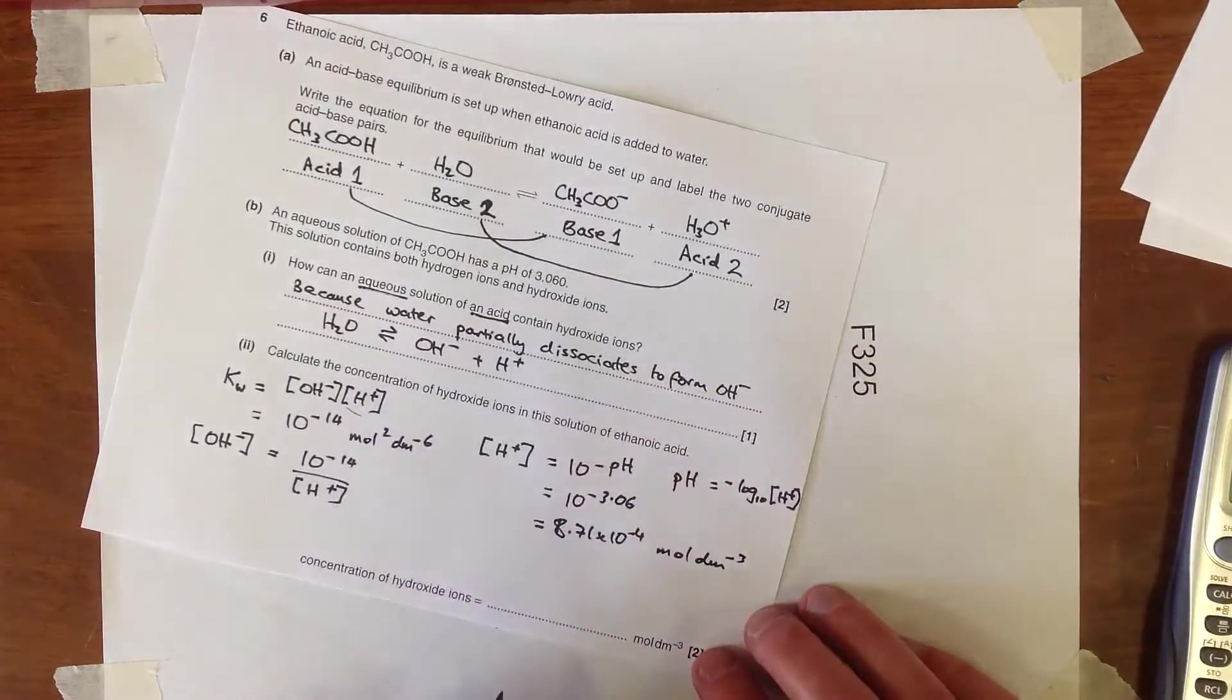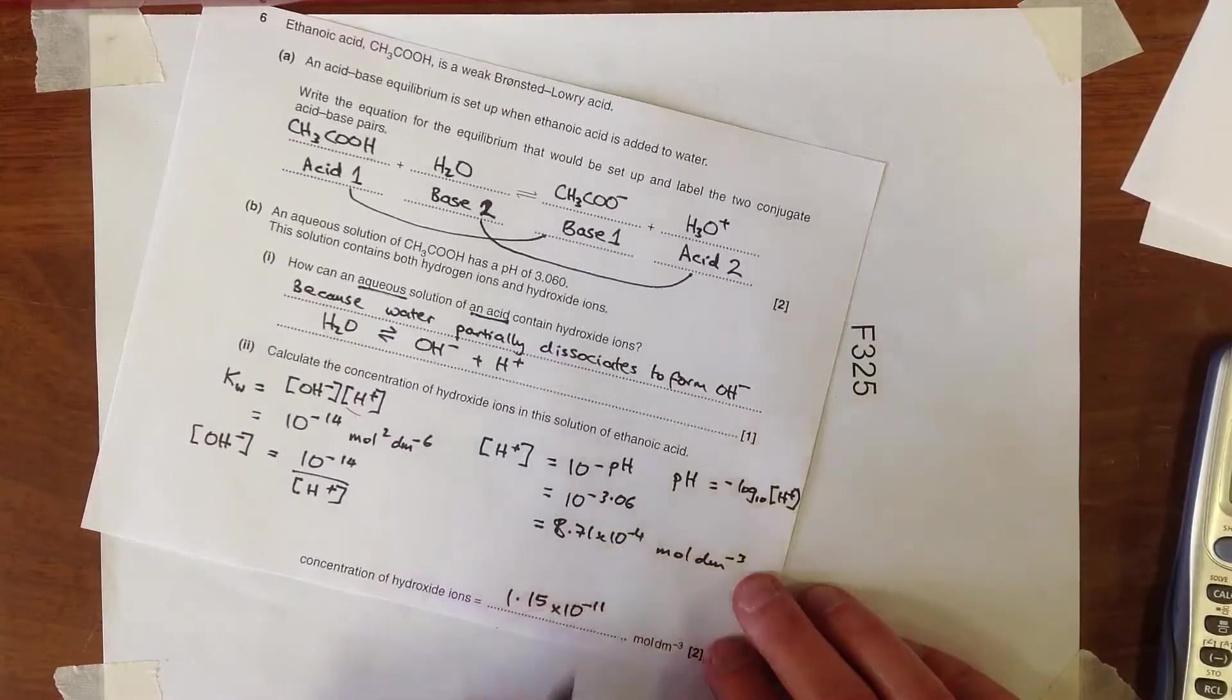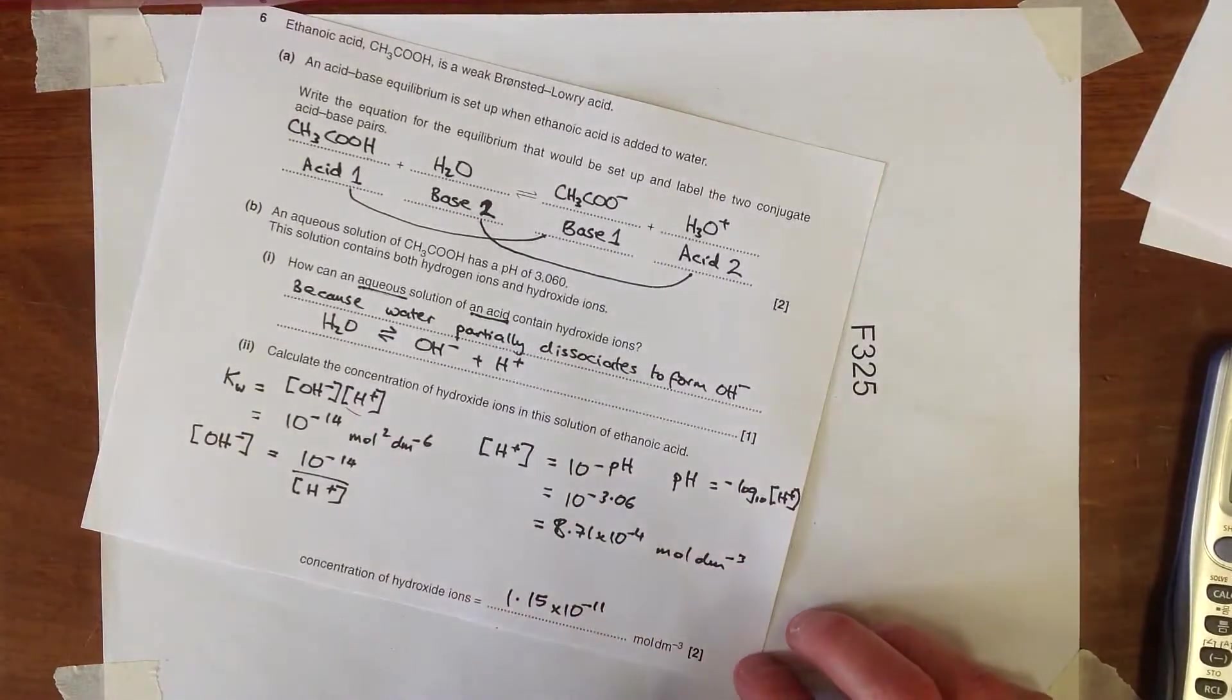And so if we plug that into this equation here, or formula here, we're going to find the concentration of hydroxide ions to be 1.15 times 10 to the -11 moles per decimetre cubed.